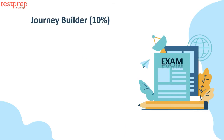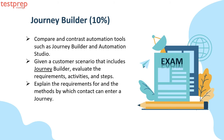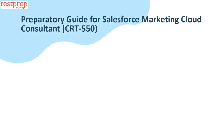Number eight: Journey Builder. It contains — first, compare and contrast automation tools such as Journey Builder. Second, given a customer scenario that includes Journey Builder, evaluate the requirements, activities, and steps. Third, explain the requirements for and methods by which a contact can enter a journey.